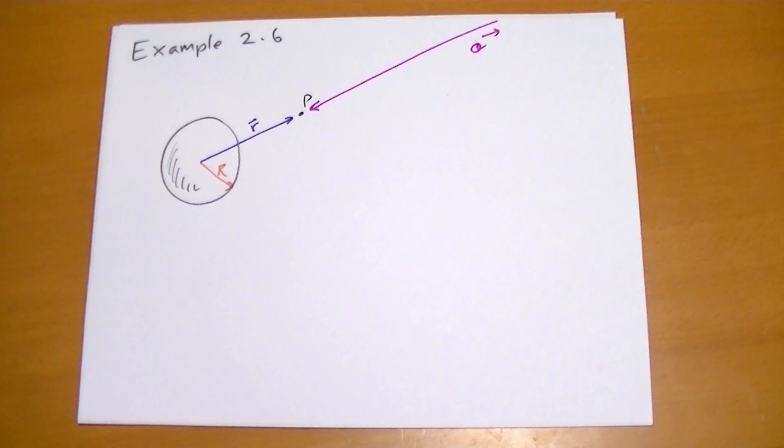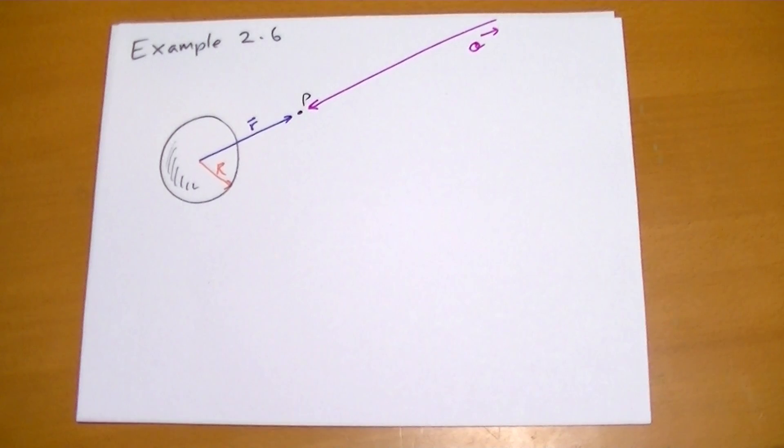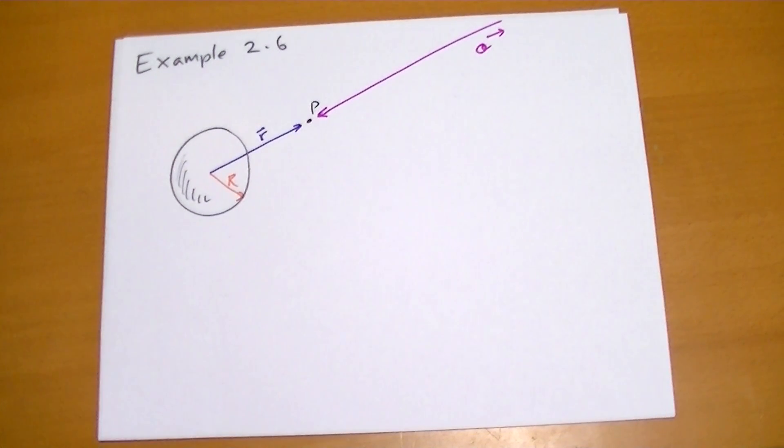Example 2.6, section 2.3.2. So this is the sphere with charge, uniform surface charge. We've probably seen this problem so many times, we're going to see it several times again.